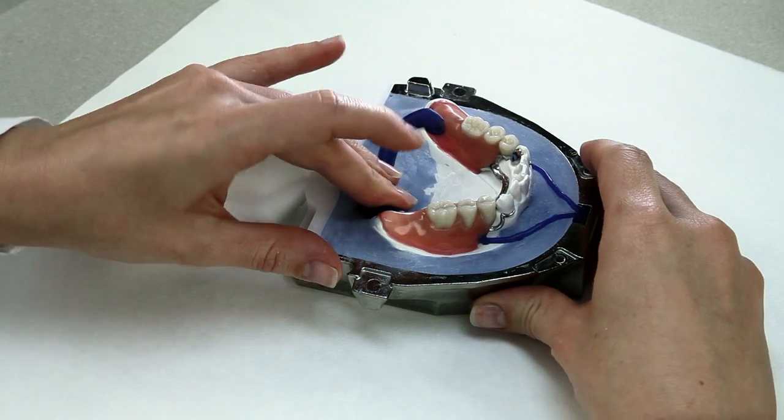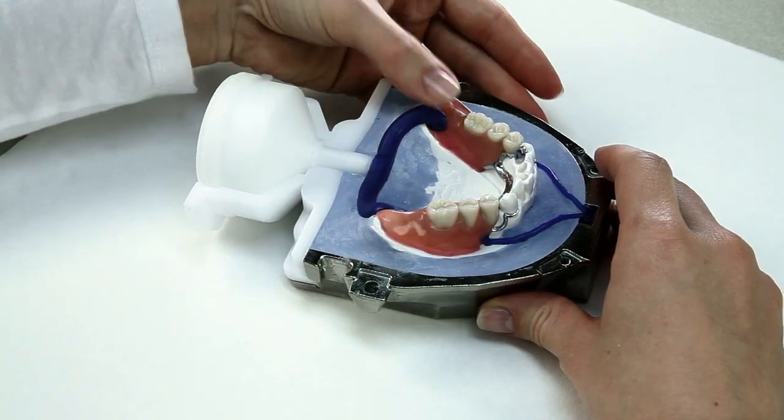The denture saddles of partial dentures are provided with a sprue each at the dorsal ends.